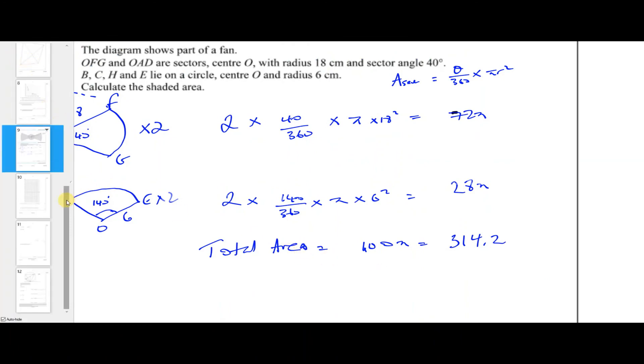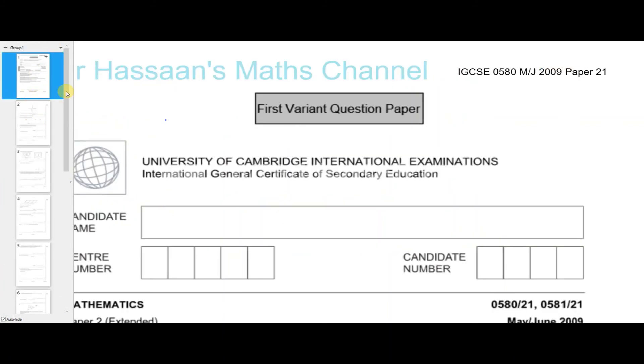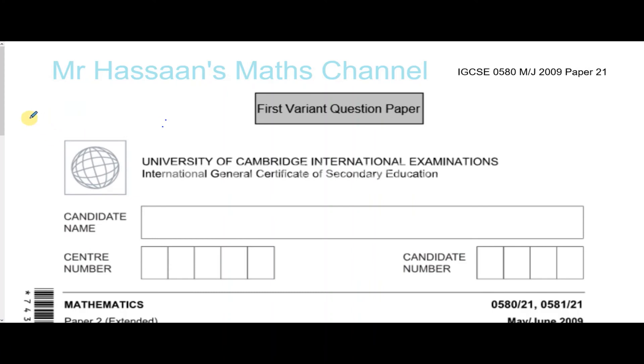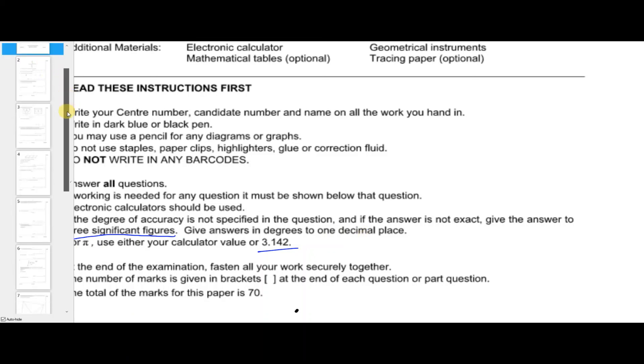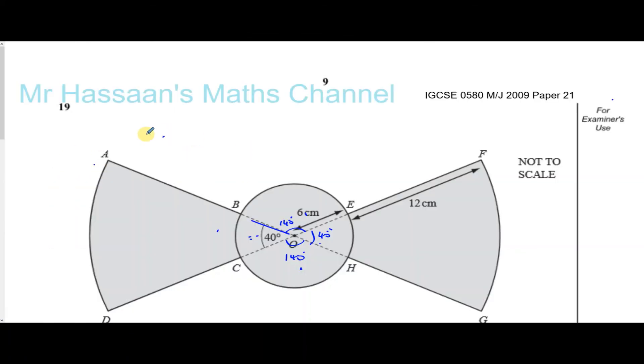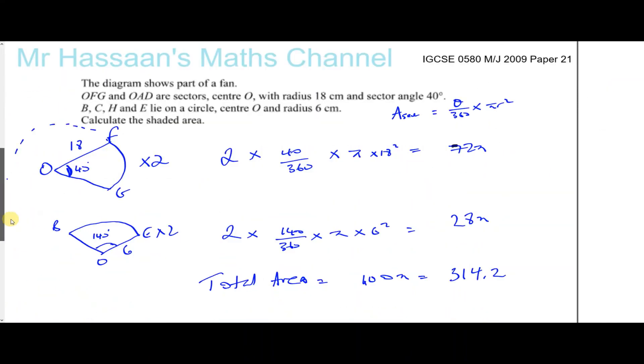You can see at the beginning of the paper it mentions that if the answer is not exact, give the answer to three significant figures. This is an area, so we have to give the answer to 3 SF if it's not exact. So the answer to this question is 314 centimeters squared.